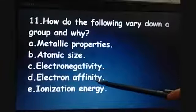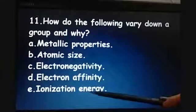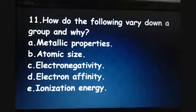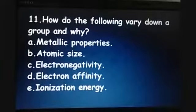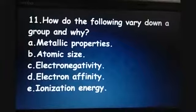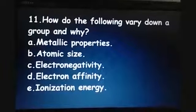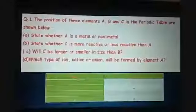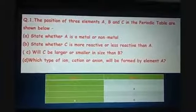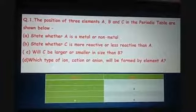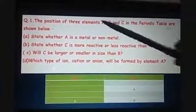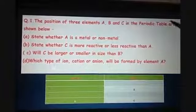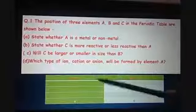So that was our assignment number 2. Now let us see the homework questions of lecture number 6. Question number 1: the position of 3 elements A, B and C in the periodic table are shown here.